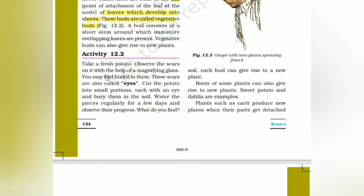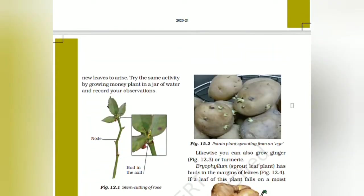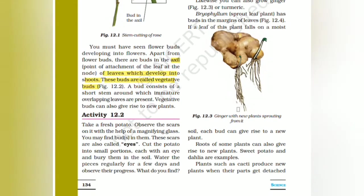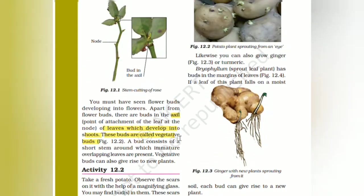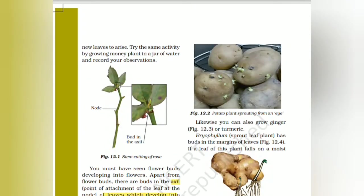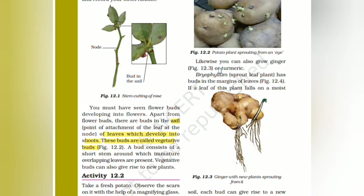Take a fresh potato and observe the scars on it with the help of a magnifying glass. You may find buds in them — these scars are referred to as the eyes. Cut the potato into small portions, each with an eye, and bury them into the soil. Water the pieces regularly. After a few days you can see buds sprouting from each eye.